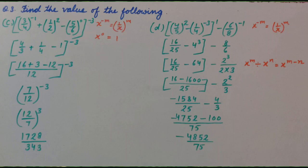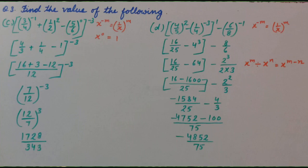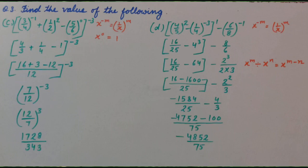When we solve it, it is 4 upon 3 plus 1 upon 4 minus 1, whole raise to the power minus 3. As addition and subtraction of rational numbers is given, we will solve the rectangular bracket same as addition and subtraction of rational numbers. So we have 7 upon 12, whole raise to the power minus 3. Negative power is given.